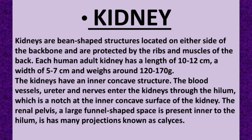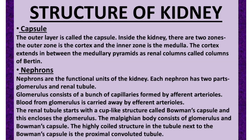The renal pelvis is a large funnel-shaped space present inner to the hilum, with many projections known as calyx. The outer layer of the kidney is called the capsule. Inside the kidney there are two zones: the outer zone is the cortex and the inner zone is the medulla.